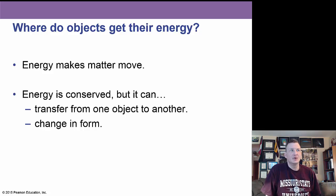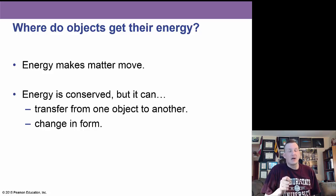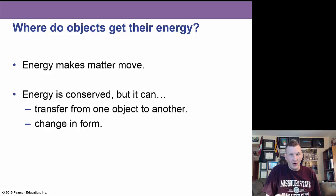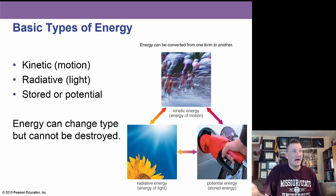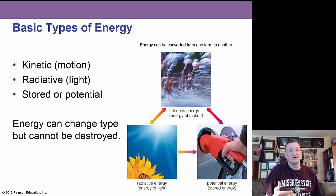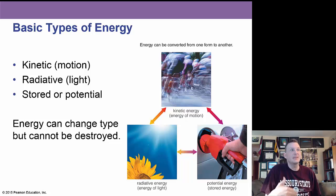Energy is what makes matter move, and energy can be conserved. It can transfer from one object to another and change in form, but the total amount of energy does not change. The basic types of energy are kinetic (motion energy), radiative (like light), and stored or potential energy — like holding a ball over a tall cliff. Energy can be changed but it cannot be destroyed.